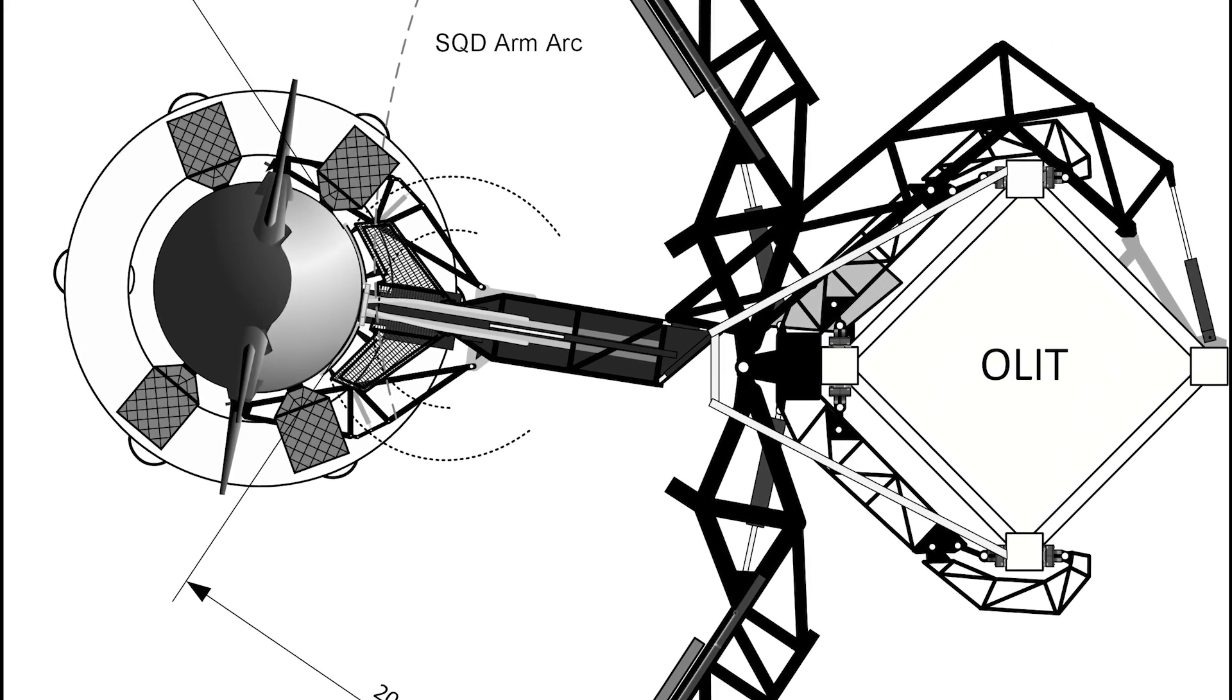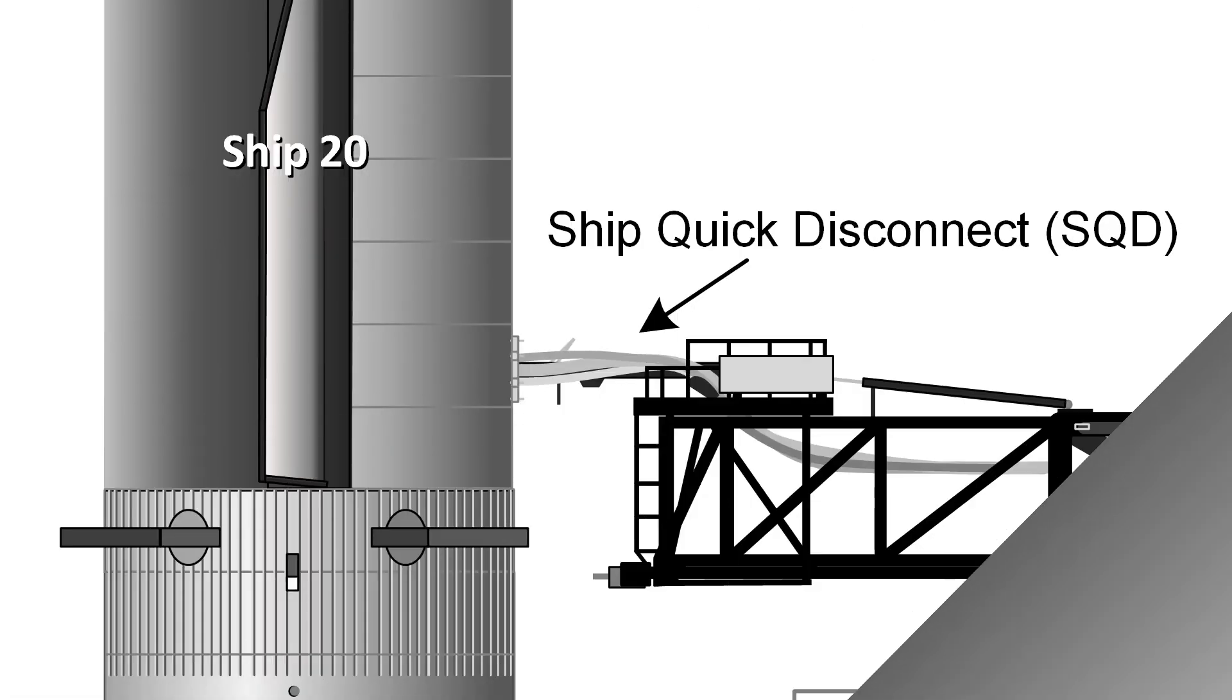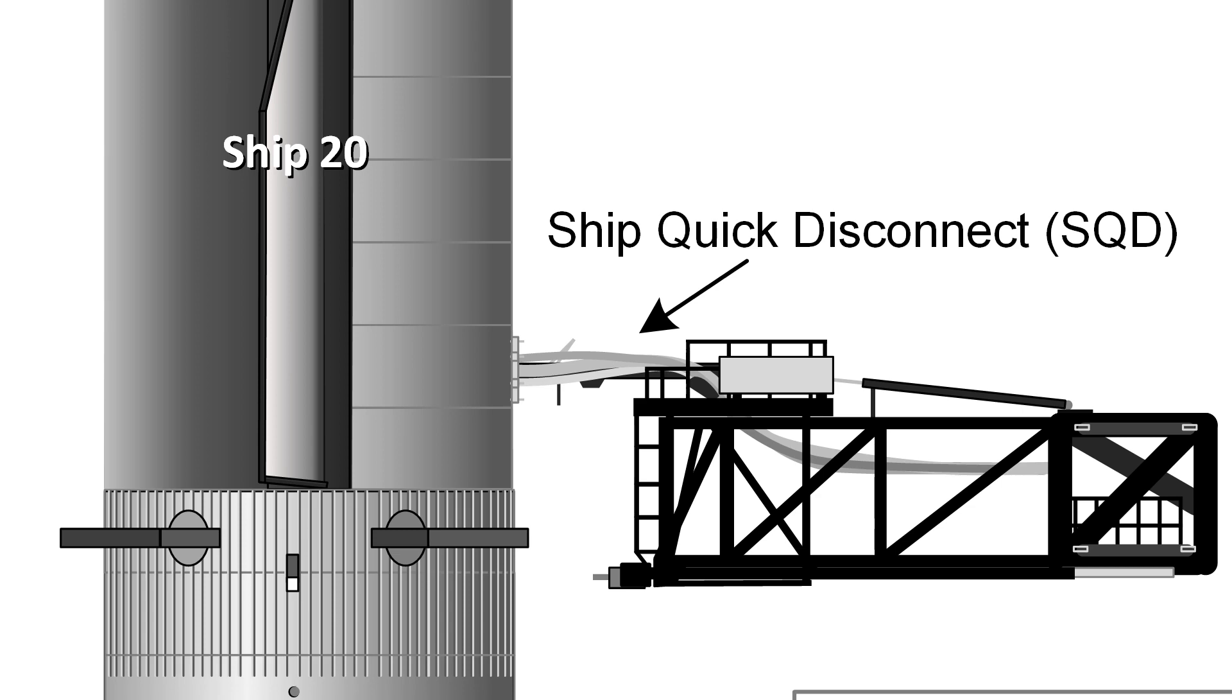At T-7 minutes, the clamps holding on to Super Heavy would be released, thus allowing the grippers to also open up and the whole claw plus upper platform to completely retract into launch position.